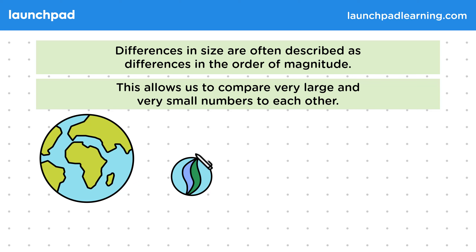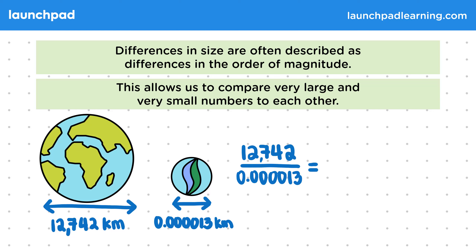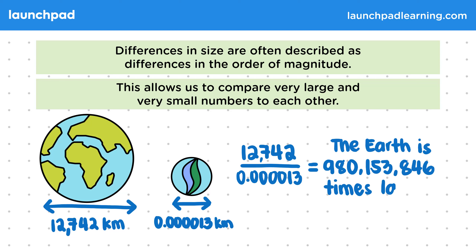From taking various measurements, we know that the Earth's diameter is 12,742 kilometres. A marble's diameter is 0.0000013 kilometres. To find out how many times larger the Earth is compared to the marble, all we need to do is simply divide its diameter by the marble's diameter. By doing this, we find out that the Earth is 980,153,846 times larger than a marble.